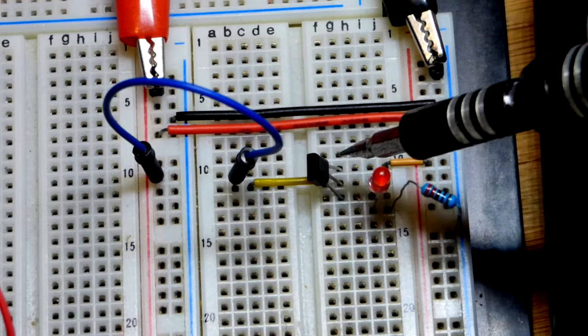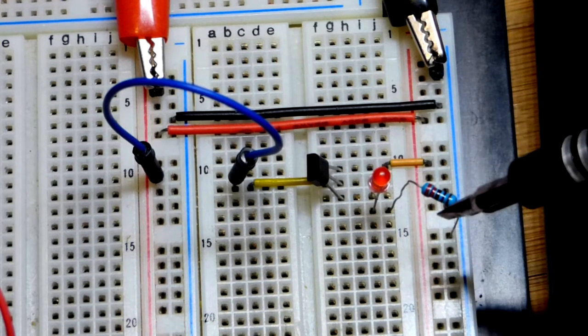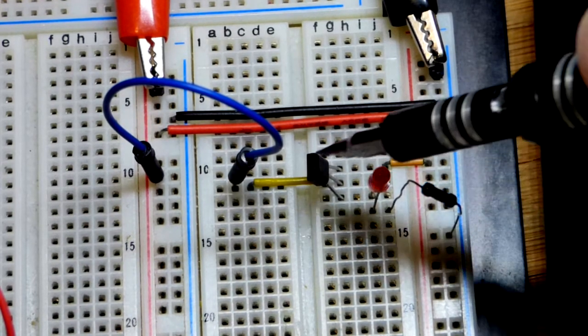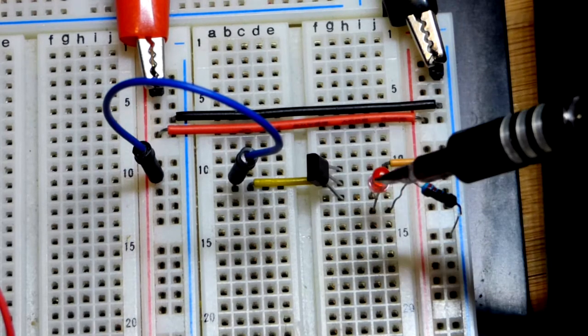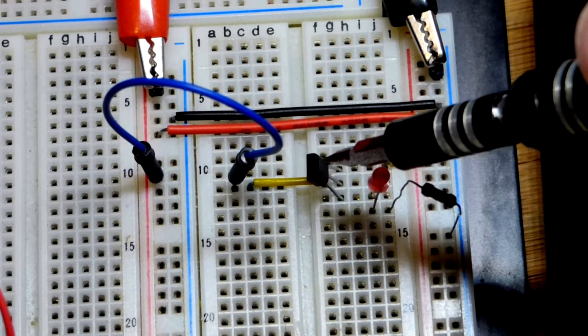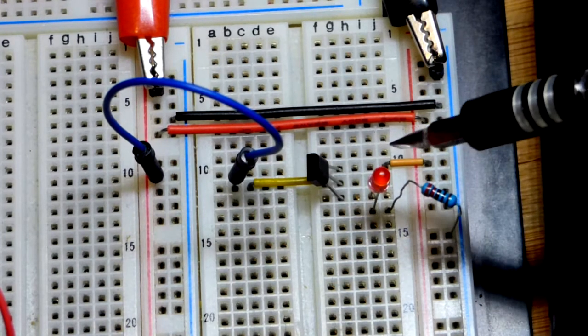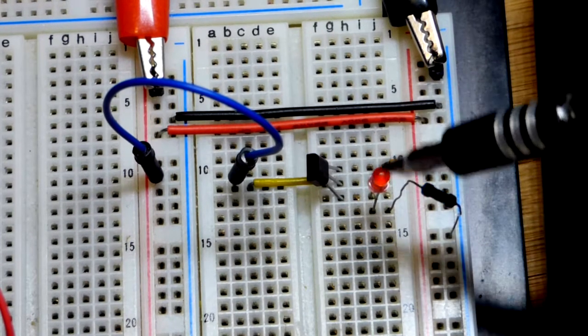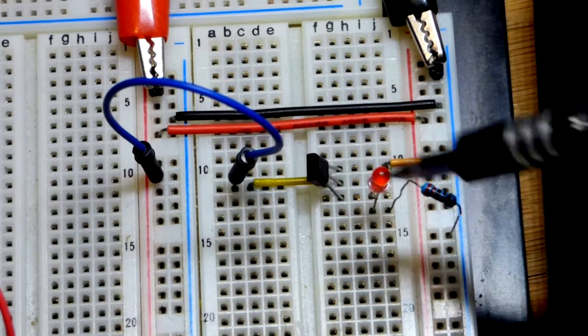We have the positive supply up here and the load down here going to ground. So the switch is on the high side of the circuit. It's commonly called a high-side switch, common for P-channel MOSFETs and for PNP bipolar junction transistors. They work on the more positive side compared to the load.